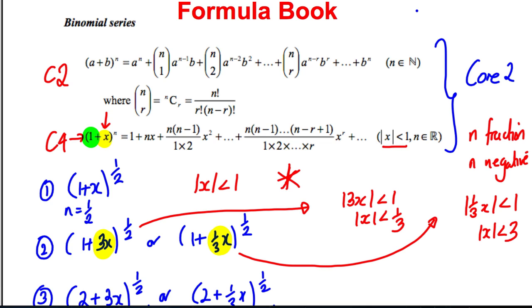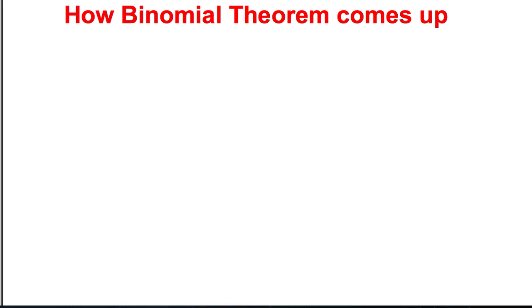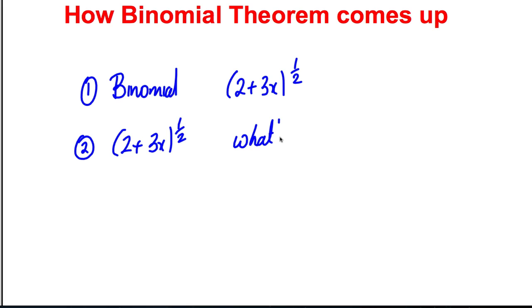Very quickly, how does it come up? Three types of questions: first, a standard binomial expansion like (2+3X)^(1/2). The second way it tends to come up is it will ask you to expand something and then ask what's the coefficient of the X^3 term, for example.